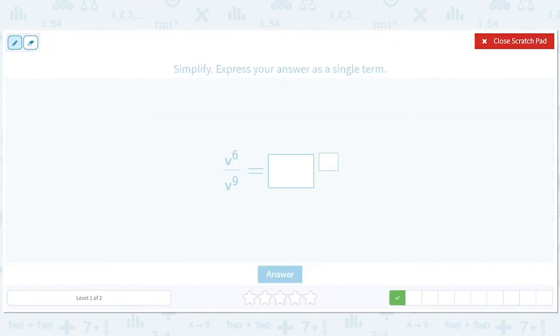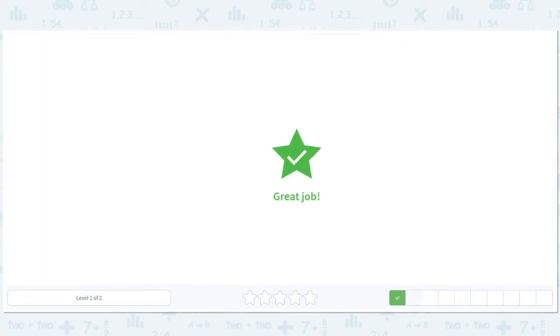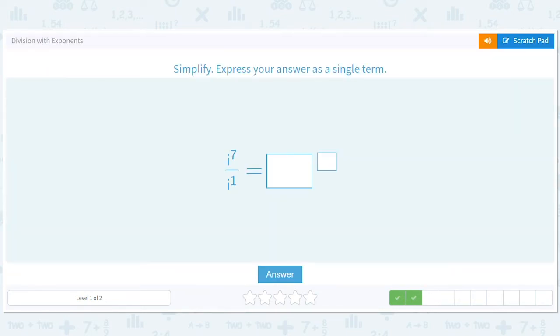b to the sixth over b to the ninth so we have six minus nine equals negative three so we should just get b to the negative third. How about this, we have seven minus one equals six so we should just have i to the sixth.